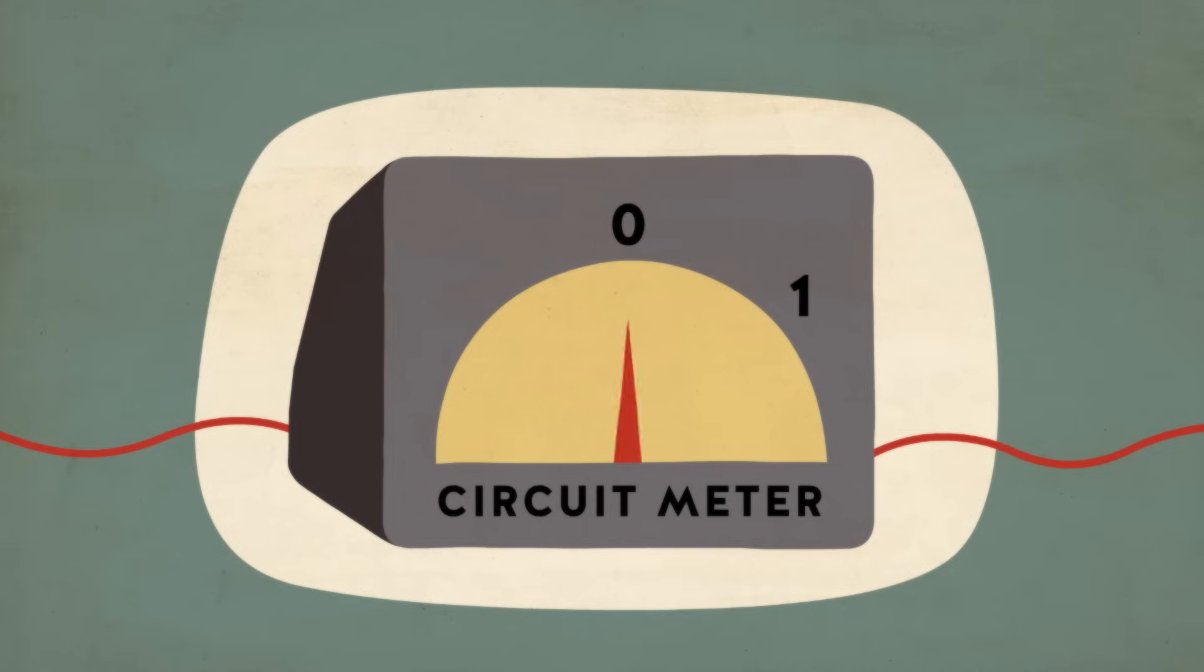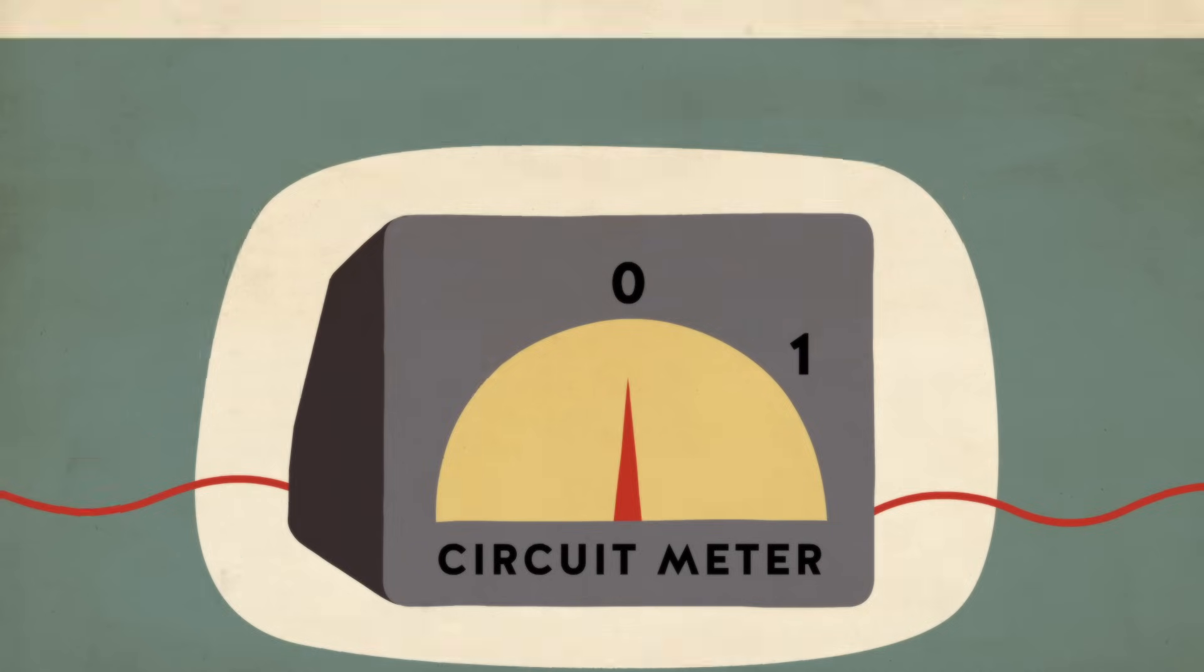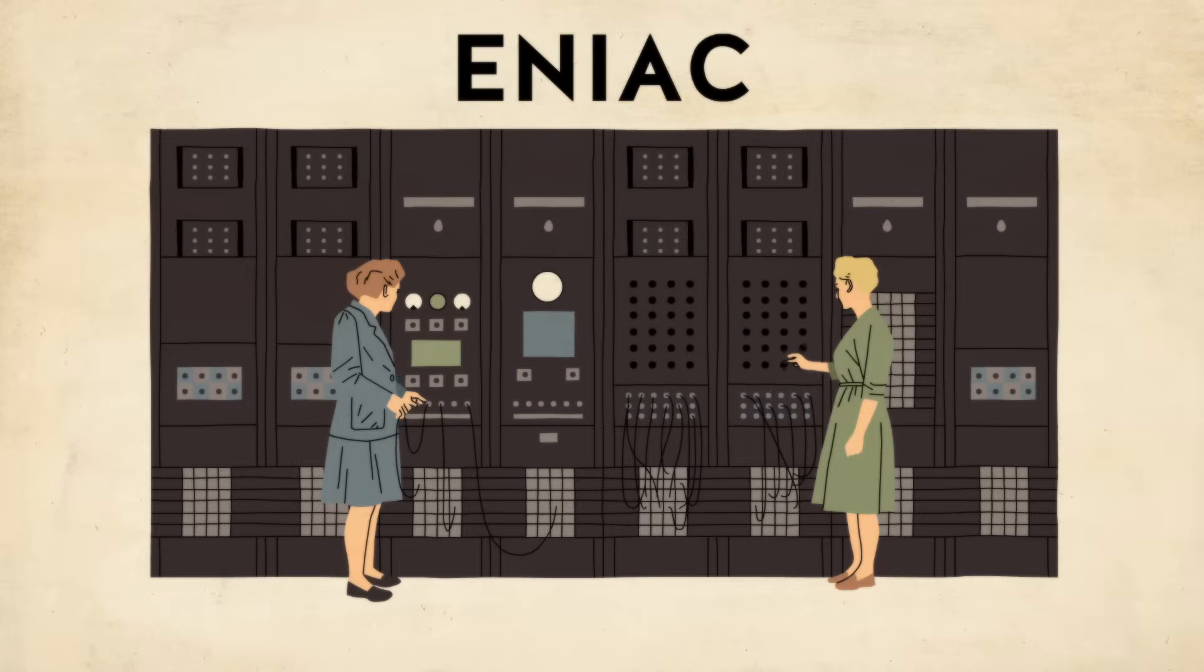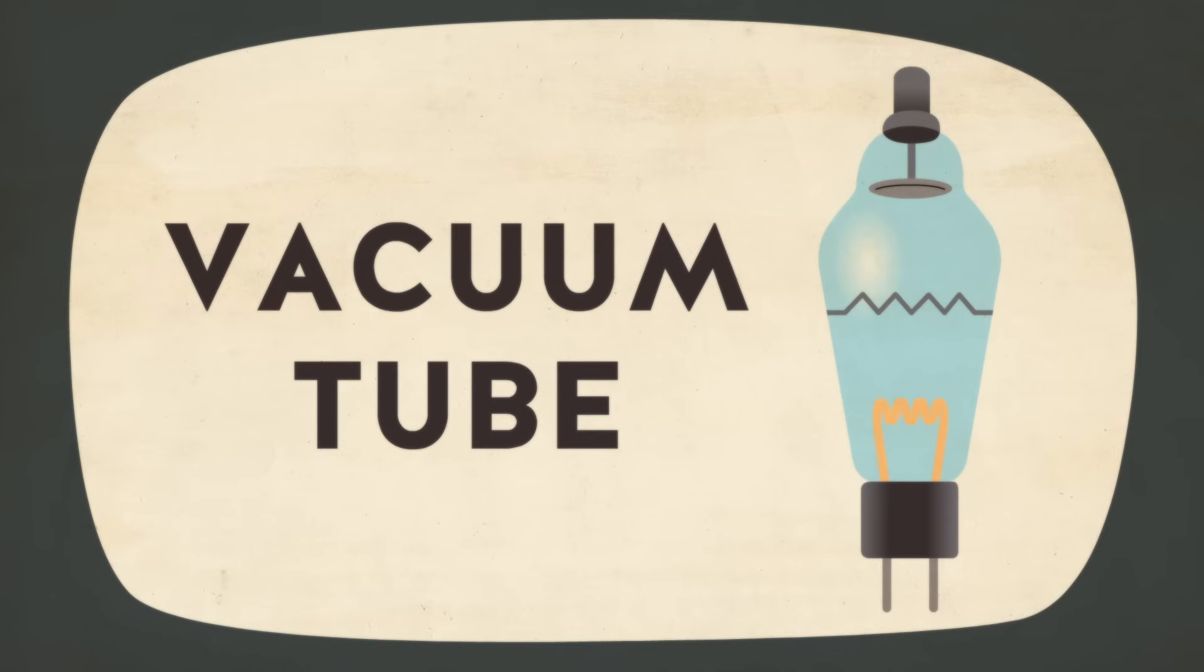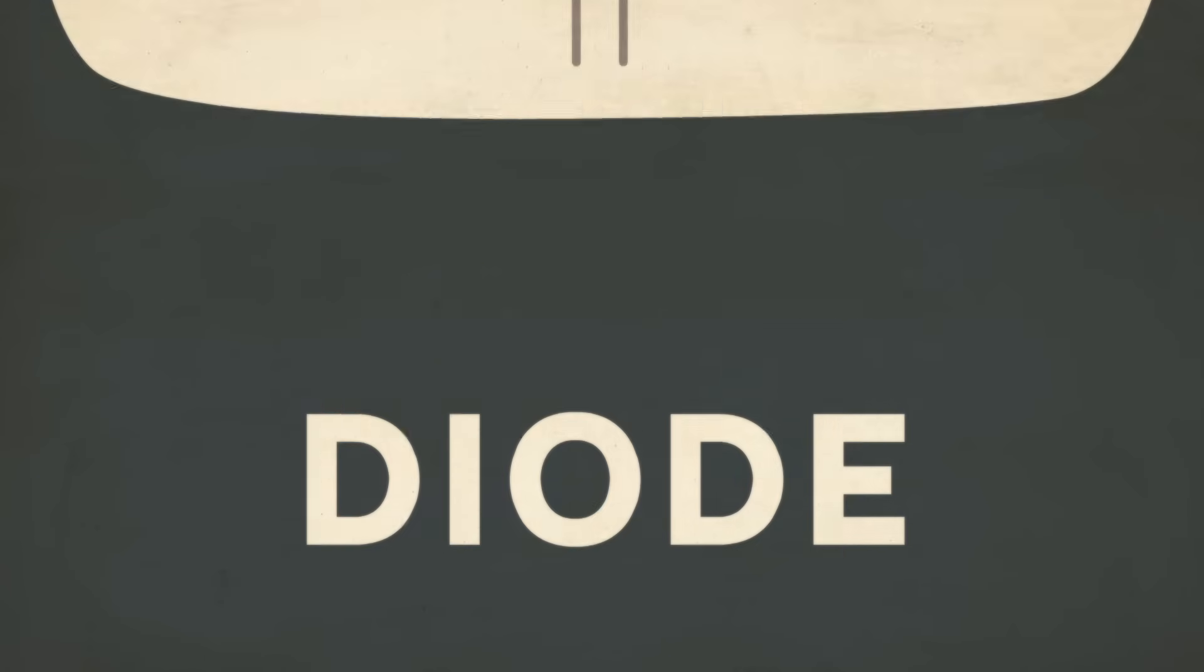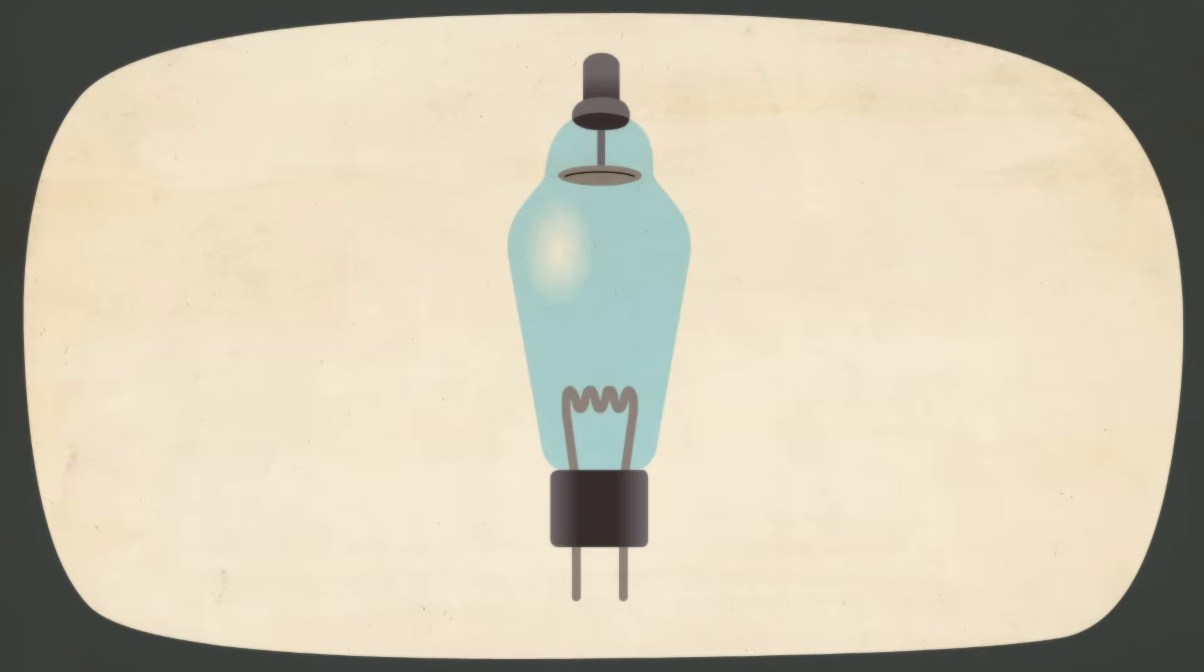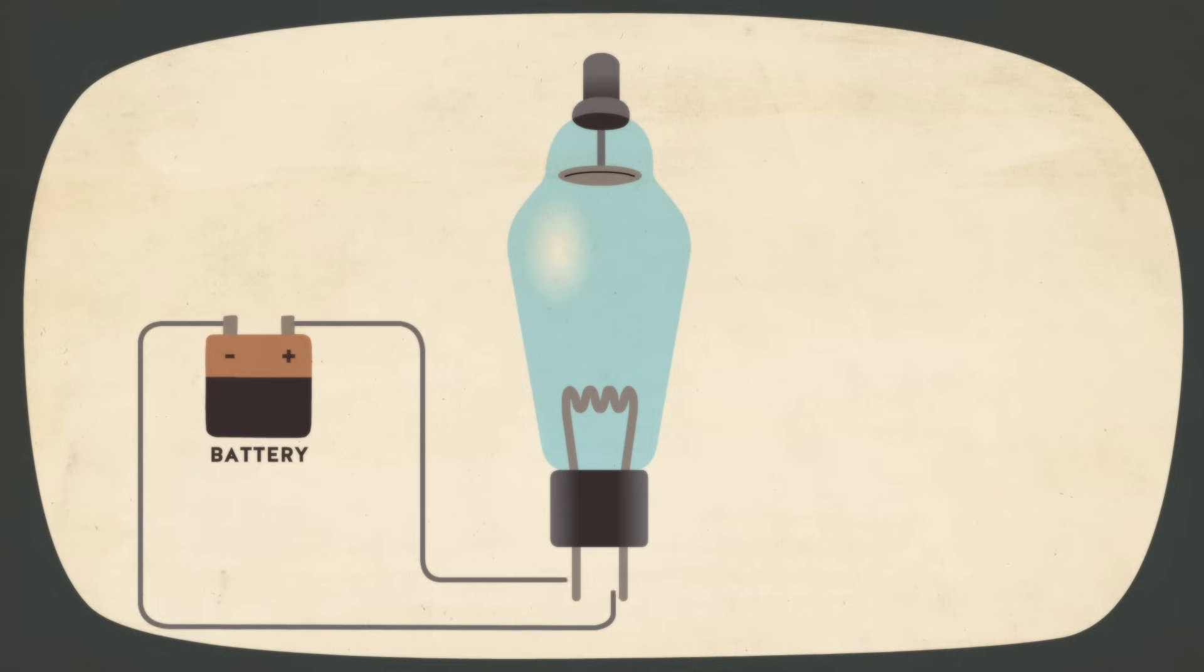This kind of system needs a reliable and accurate method for controlling electric current. Early electronic computers like the ENIAC used a device called the vacuum tube. Its early form, the diode, consisted of two electrodes in an evacuated glass container. Applying a voltage to the cathode makes it heat up and release electrons.